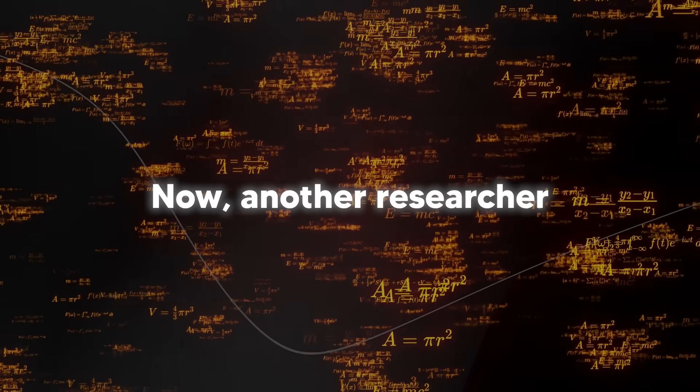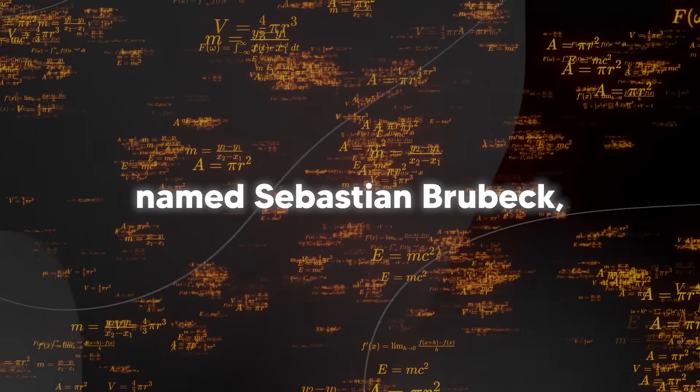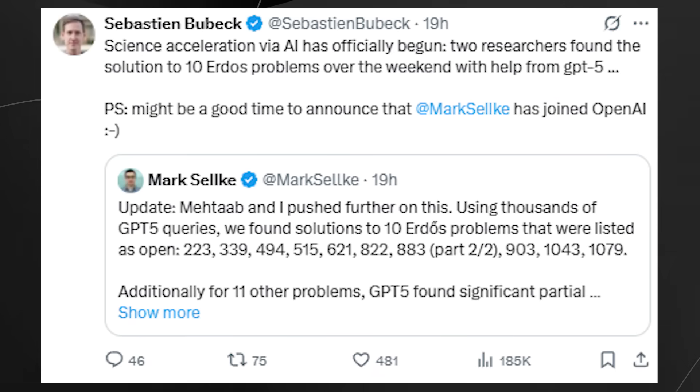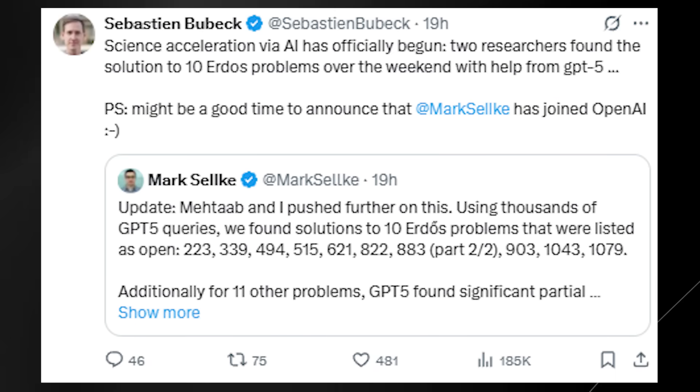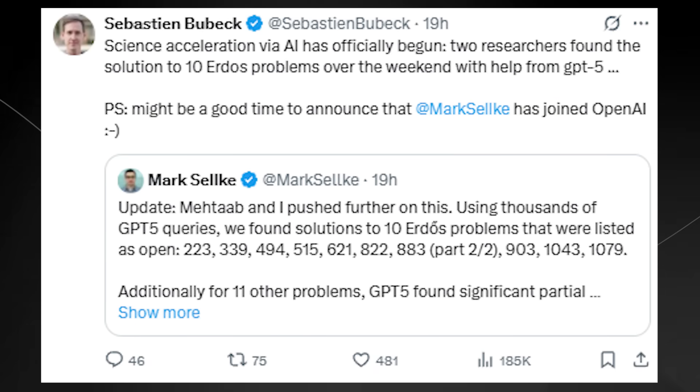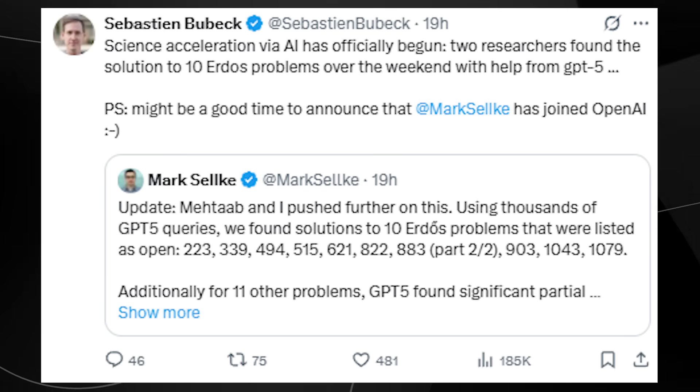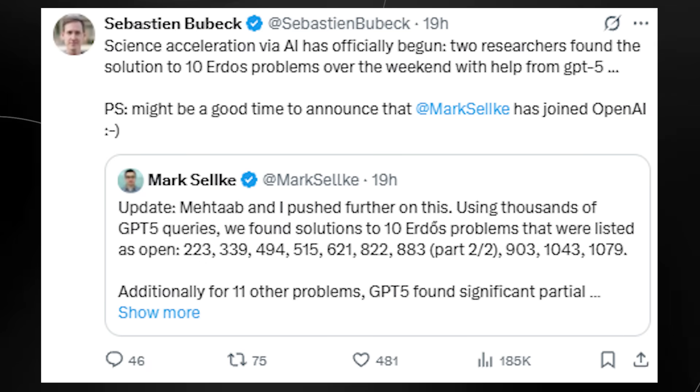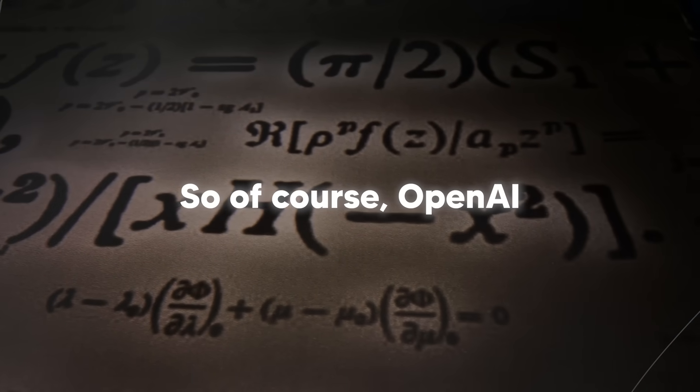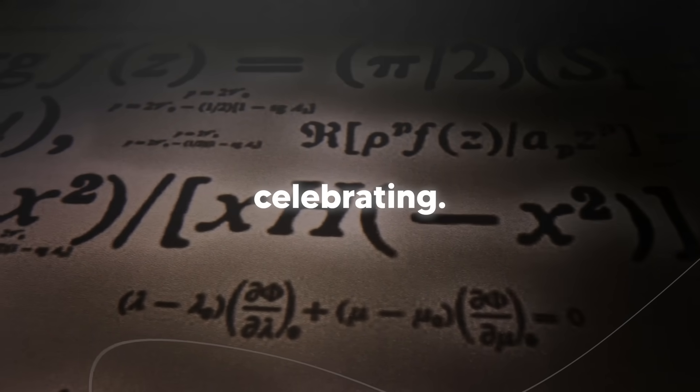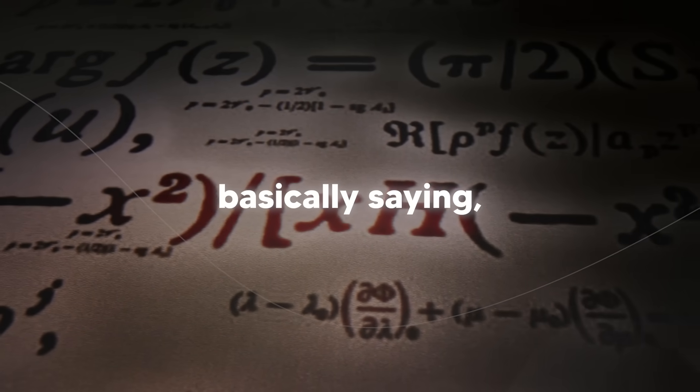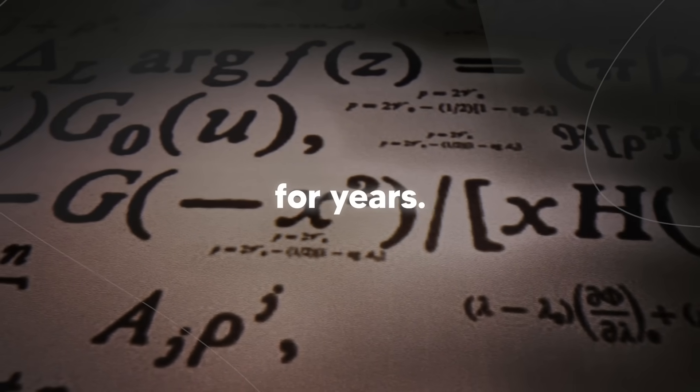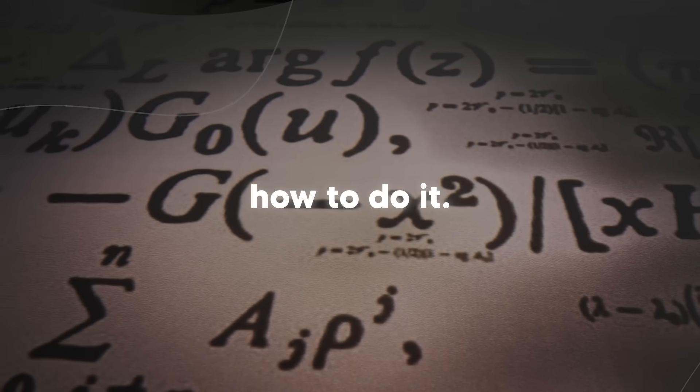Now, here's where we get onto the celebration. Another researcher named Sebastian Bubeck, who also works in AI, he sees the tweet, and he's pretty excited. He quote tweets it and says, science acceleration via AI has officially begun. Two researchers found the solution to an Erdős problem with the help from GPT-5. And then he adds this little postscript: it might be a good time to announce that Mark Selk has joined OpenAI. So OpenAI are essentially celebrating. They're using this as a recruiting announcement, and they're basically saying, look at how amazing our AI is. It's solving problems that have stumped mathematicians for years. And by the way, we just hired the genius who figured out how to do it.